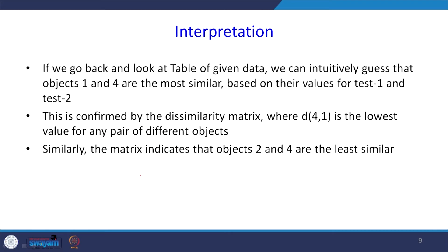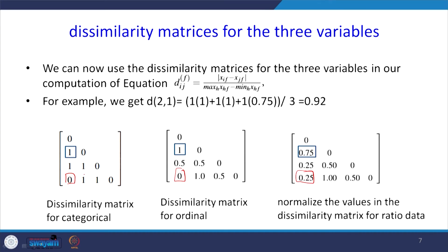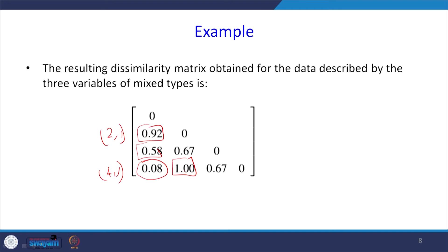This is confirmed by the dissimilarity matrix where position 4,1 has the lowest value of 0.08 among any pair of objects — so objects 1 and 4 are most similar. Conversely, the matrix indicates that objects 2 and 4 are the least similar. Looking at position 2,4 across the individual matrices — categorical gives 1, ordinal gives 1, ratio gives 1 — and in the resulting combined matrix the value is also 1, indicating they are highly dissimilar.